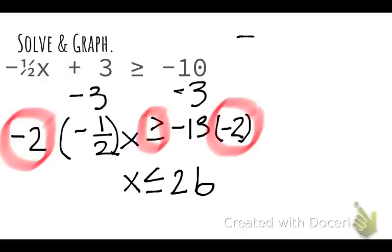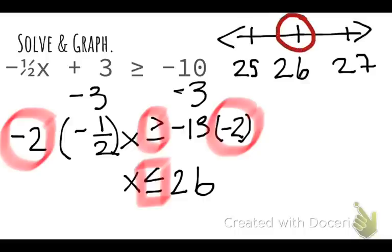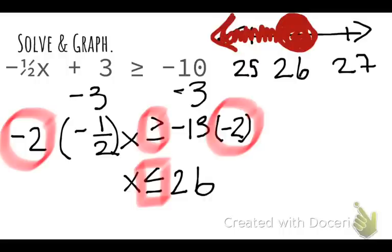To finish my solution, I'll make a number line with 26 in the middle, choosing 27 to the right and 25 to the left. Because it says 'less than or equal to,' I'll use a closed circle for 26 and shade it in, because 26 is a solution. With the variable on the left, values less than or equal to 26 are found to the left of 26. So 26 and any value to the left is a solution to this inequality.